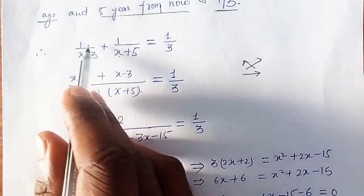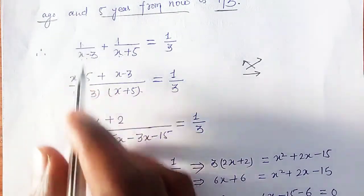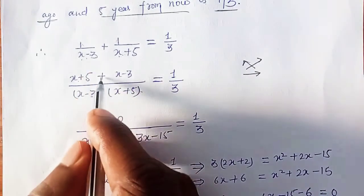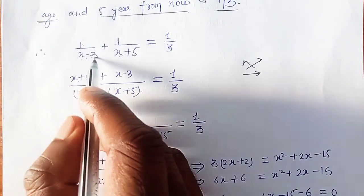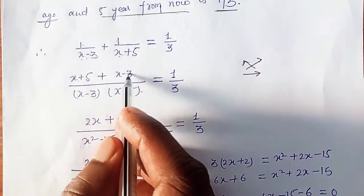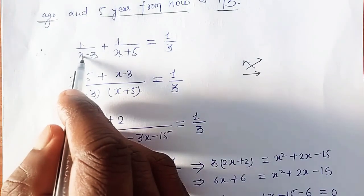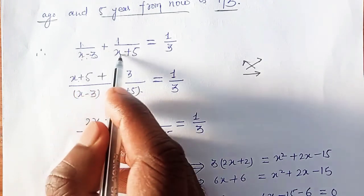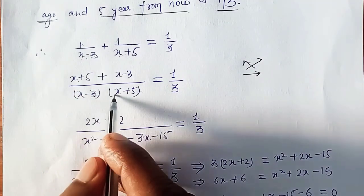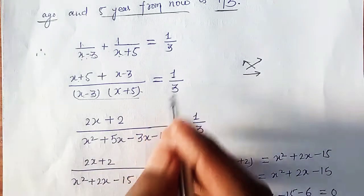From 1/(x−3) + 1/(x+5) = 1/3, combining the left side gives (x+5 + x−3) / [(x−3)(x+5)] = 1/3, which simplifies to (2x+2) / [(x−3)(x+5)] = 1/3.